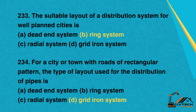Question 233: The suitable layout of a distribution system for well-planned cities is. A. Dead end system. B. Ring system. C. Radial system. D. Grid iron system. Correct option: B. Ring system.